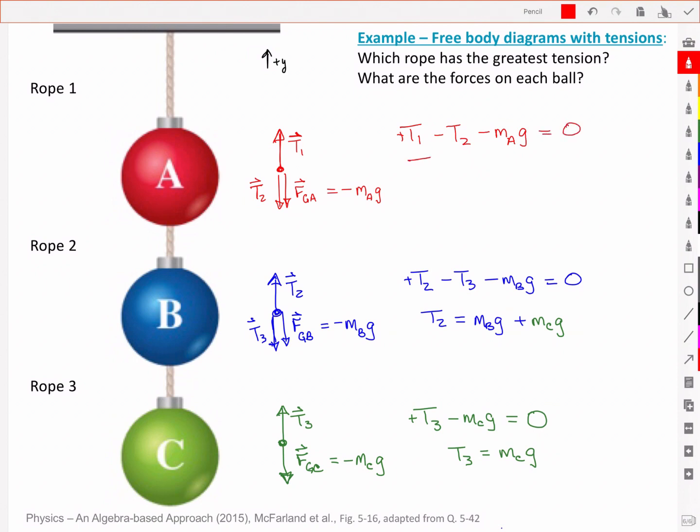and solving then T1. Take the other two to the other side. They become positive. That means I've got MAG plus T2.